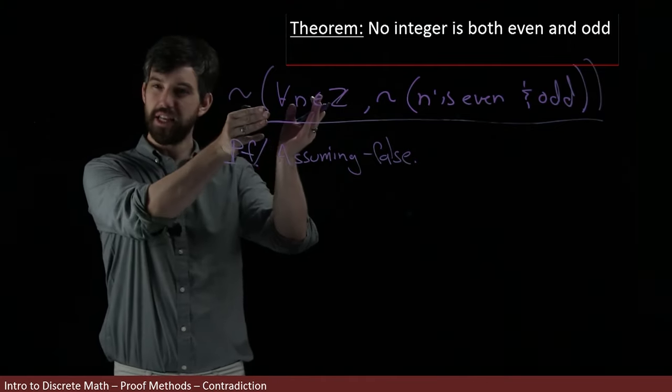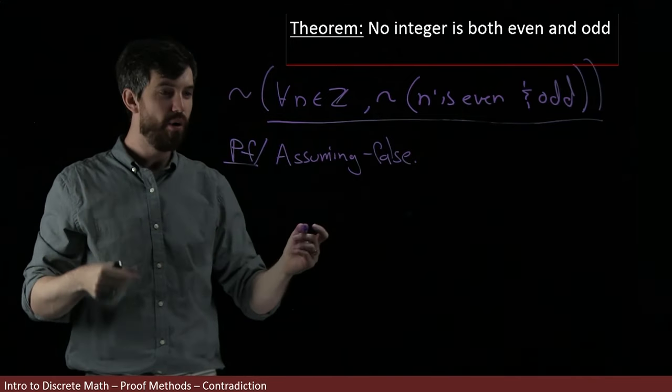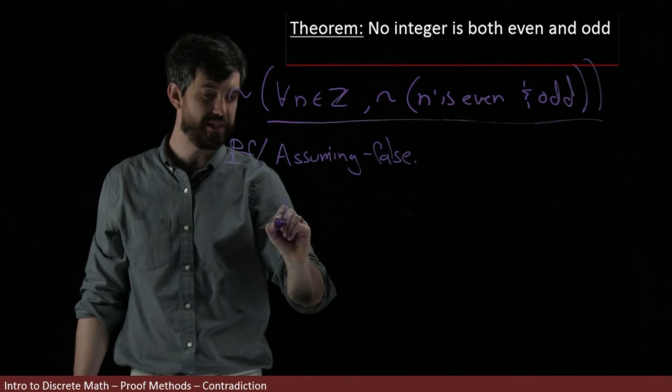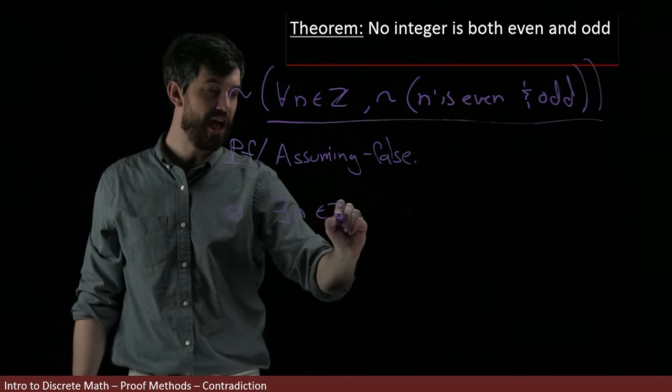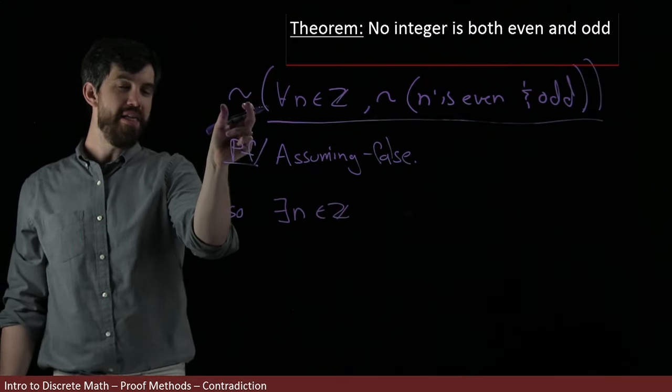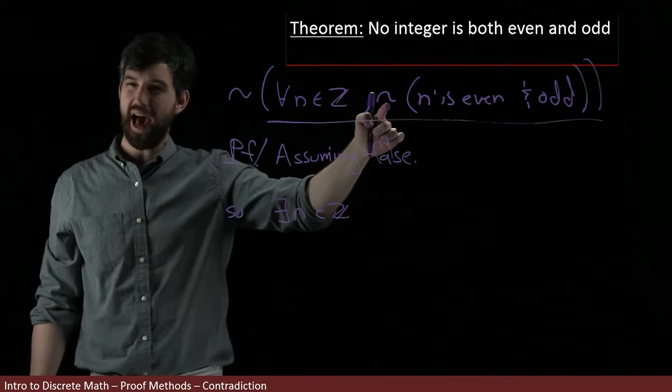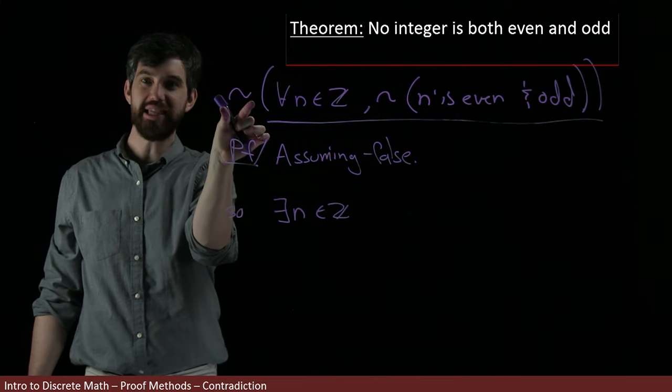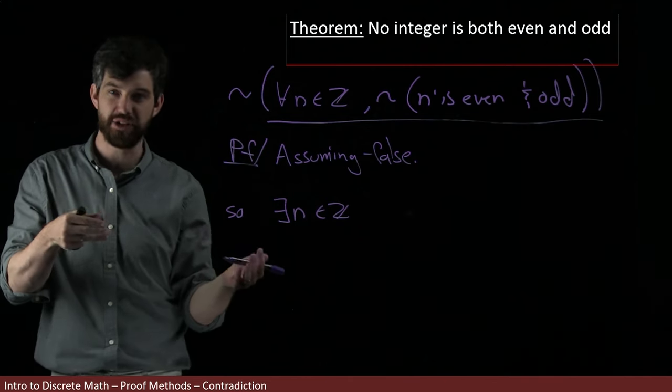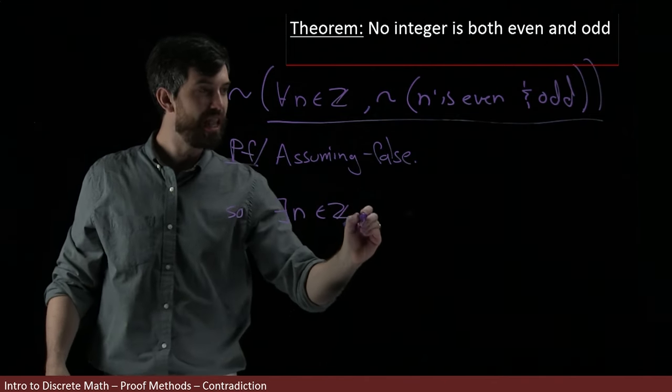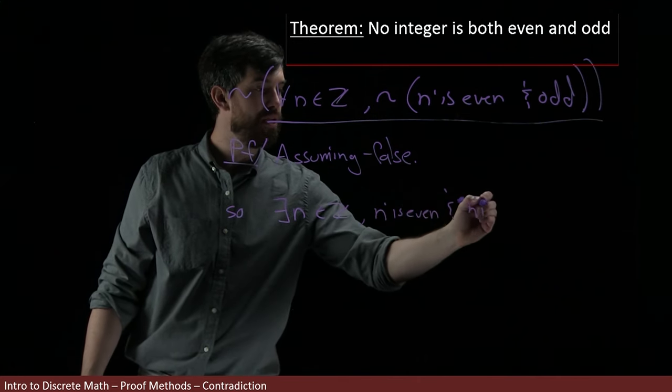But because this is a quantified statement, I know how negations work with quantified statements, that what I'm going to get is the for all flips to be an there exists. I have an existence of an n inside of the integers. And then the negation moves inside. But notice how we already have a negation moved inside. So if I take this negation and move it inside, I have two negations, and a double negative cancels. So what I'm just left with is n is even and n is odd.